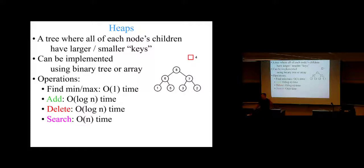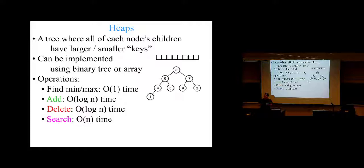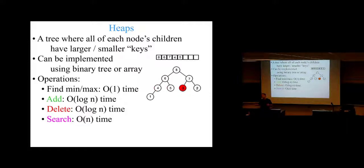In fact, you can implement a heap as an array. The middle element of the array is like the root of a tree. All the left half of the array is the left subtree and the right half is the right subtree, and you just keep going. An array can be a very nice natural implementation of a full binary tree.